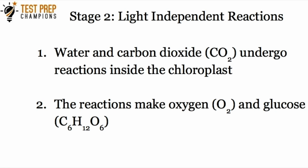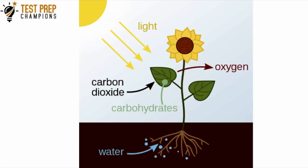Now let's talk about stage two, which we call the light-independent reactions. The first part that happens in stage two is that water and carbon dioxide — also known as CO2 — undergo reactions inside of the chloroplast. The second thing to know is that these reactions make oxygen and glucose. In this picture, we see sunlight, carbon dioxide from the air, and water in the soil reacting to make oxygen and glucose.